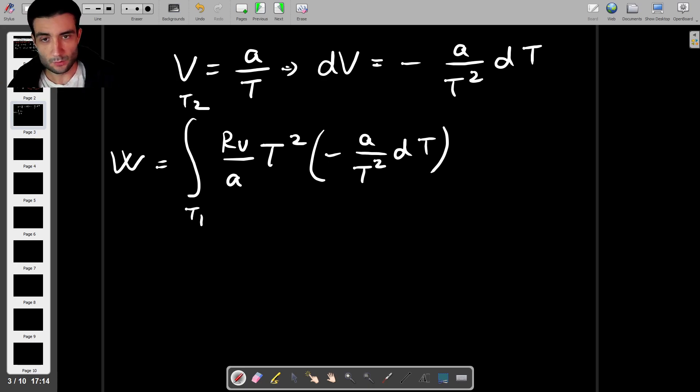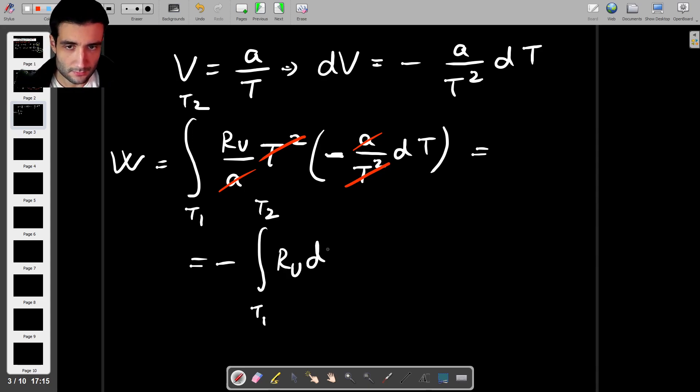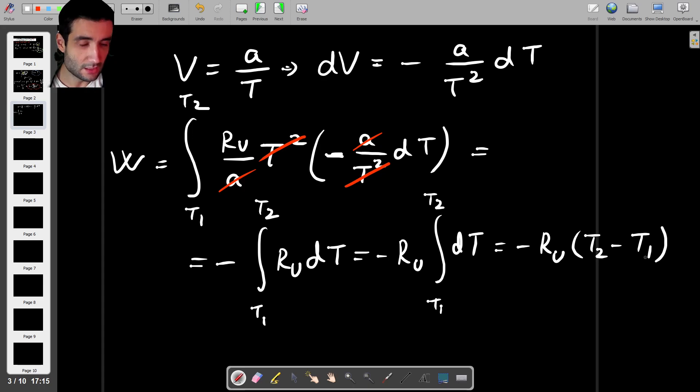And what you'll see is that there will be some cancellations thankfully so we have A goes with A, T squared goes with 1 over T squared and then this is therefore minus integral T1 to T2 of RU dT. And this is a trivial integral, this is just minus RU times T2 minus T1. Now we don't know T2 minus T1 but we know the difference and that's what matters so we know T2 minus T1 is delta T so the work is minus the universal gas constant times delta T.